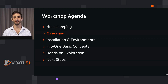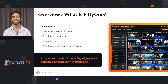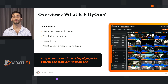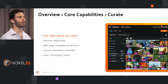It is officially time for an overview. What is FiftyOne? In a nutshell, FiftyOne is an open source tool for building high quality datasets and high quality models. FiftyOne allows you to visualize your data, clean it, curate it, understand it, find hidden structure, evaluate models, and so much more. FiftyOne is flexible and customizable, and it's connected to the greater machine learning and computer vision ecosystem.